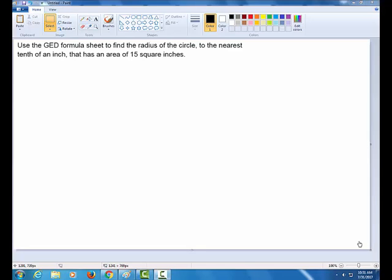So let's take a look at this. It says use the GED formula sheet to find the radius of the circle to the nearest tenth of an inch that has an area of 15 square inches. So nice little cheat that they told me here, use the GED formula sheet. A great hint here that I could consult the formula sheet is this idea of area. Let's go do that.